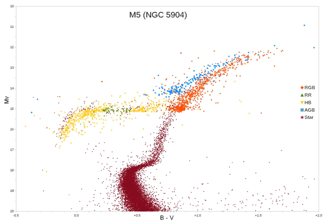Different globular clusters often display different HB morphologies, meaning that the relative proportions of HB stars existing on the hotter end of the RR Lyrae gap, within the gap, and to the cooler end of the gap varies sharply from cluster to cluster. The underlying cause of different HB morphologies is a long-standing problem in stellar astrophysics. Chemical composition is one factor — usually in the sense that more metal-poor clusters have bluer HBs — but other stellar properties like age, rotation, and helium content have also been suggested as affecting HB morphology.